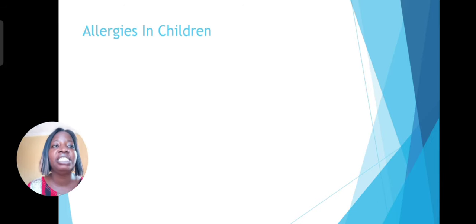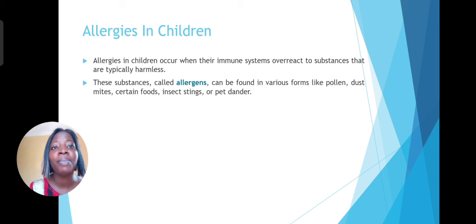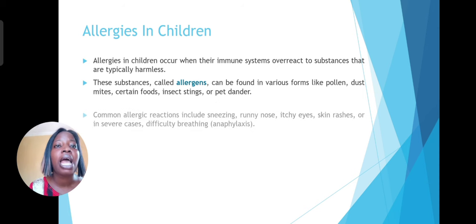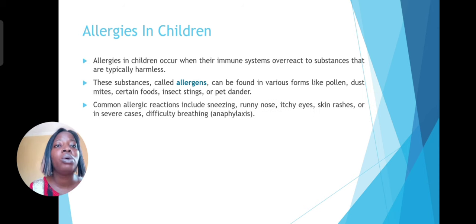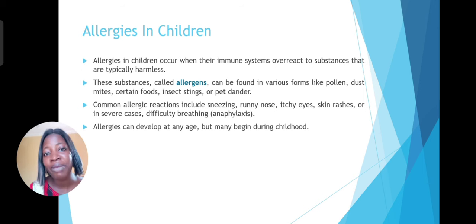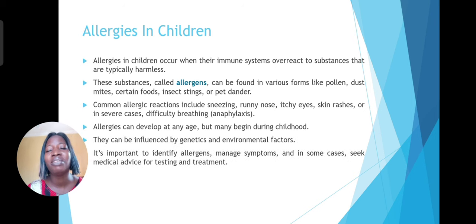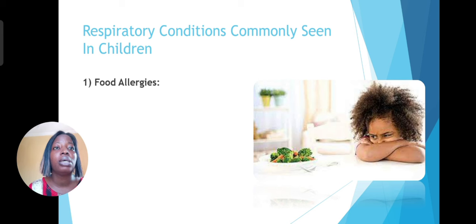Let's look at allergies in children. Allergies occur when the immune system overreacts to substances that are typically harmless — these substances are known as allergens. Common allergic reactions include runny nose, itchy eyes, and sneezing. Allergies can develop at any age, but many begin during childhood. They can be influenced by genetic and environmental factors, and it's very important to identify these allergies so that you can manage symptoms and control them.